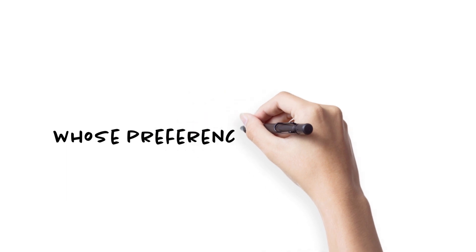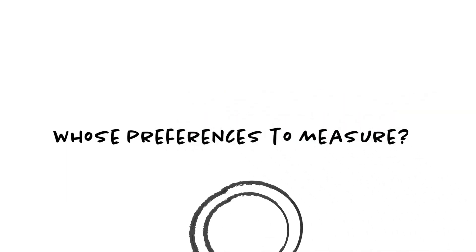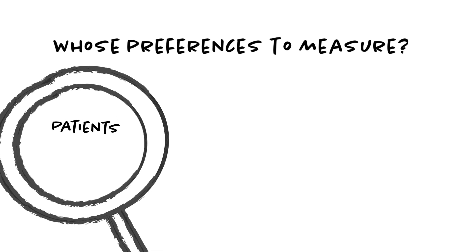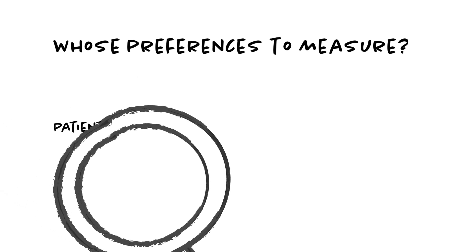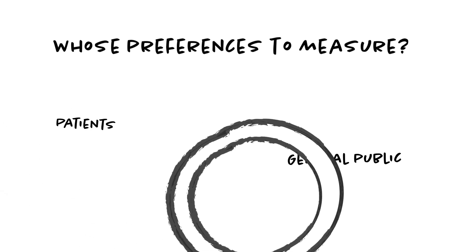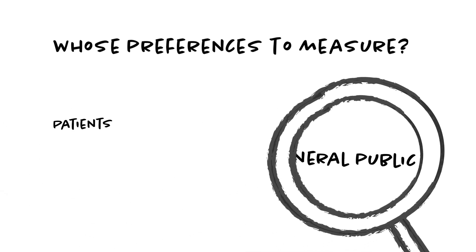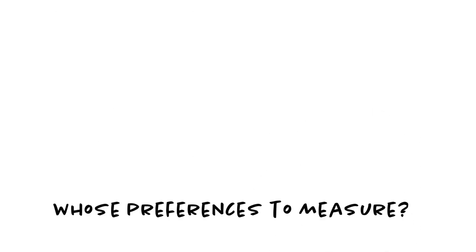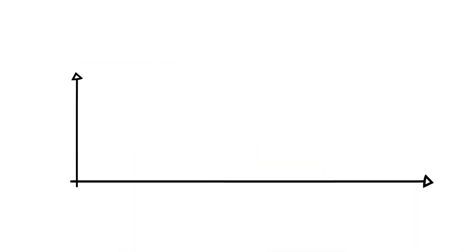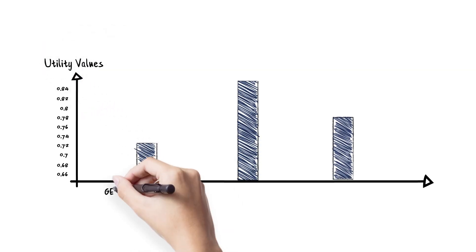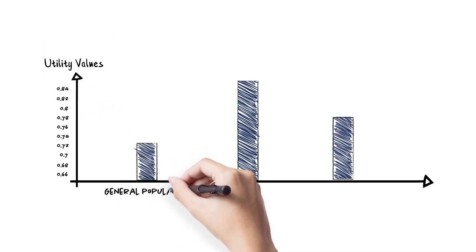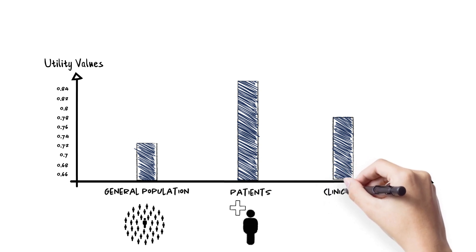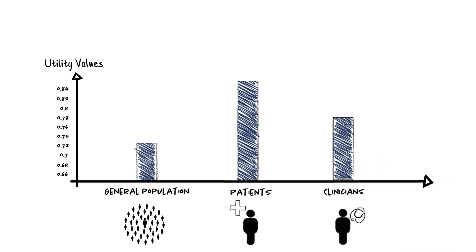For these direct methods, one question is: whose preferences to measure? Patients? Makes sense — they are the people who experience the impact of the disease and treatment. The general public? Makes even more sense. In a publicly funded healthcare system, it is society's resources that are being allocated. This question is important because there is some evidence that utilities differ between these population groups.